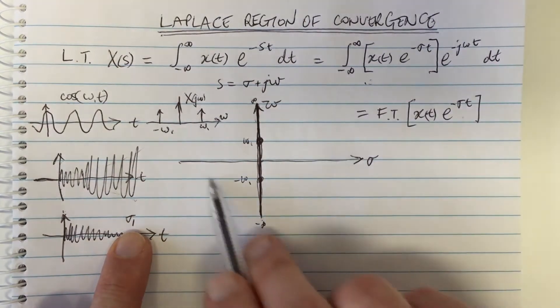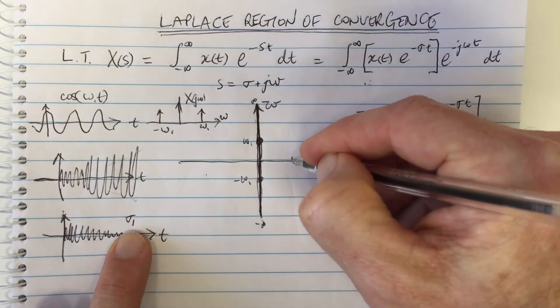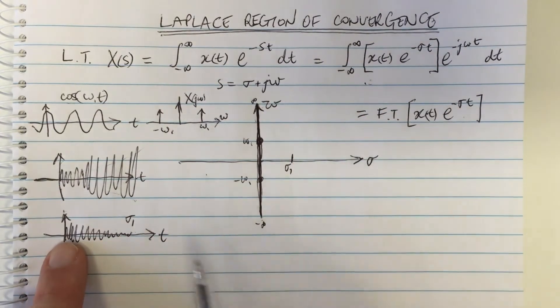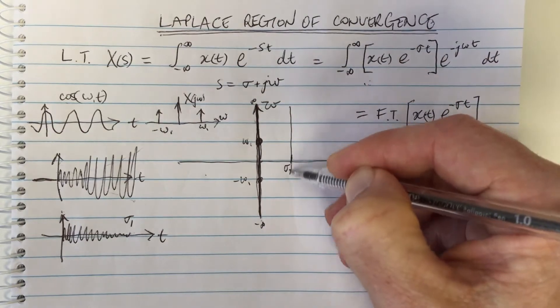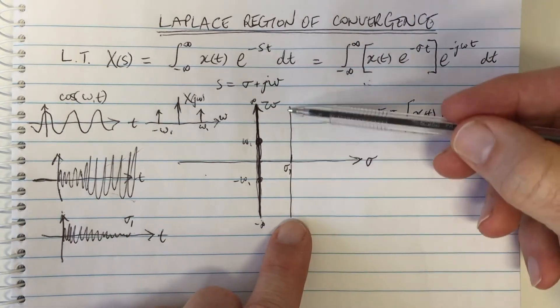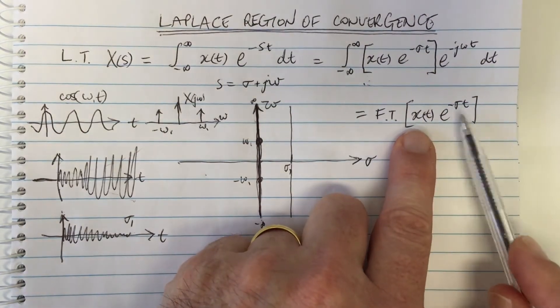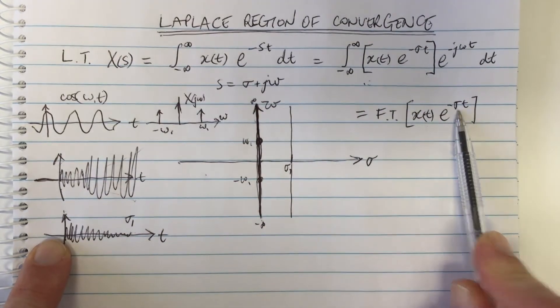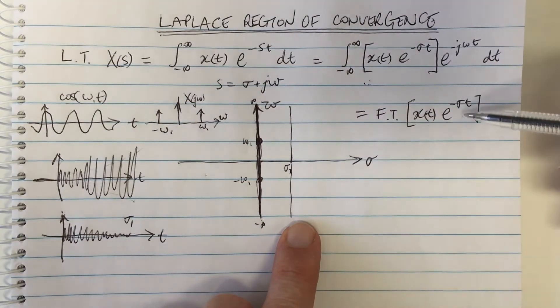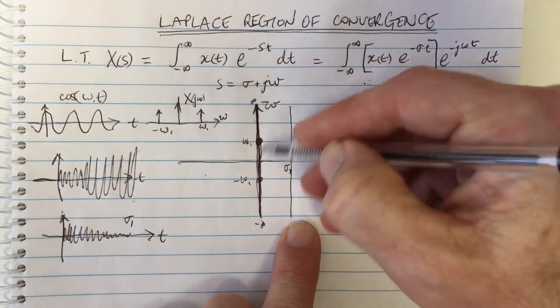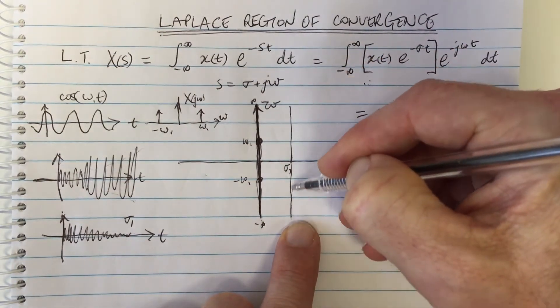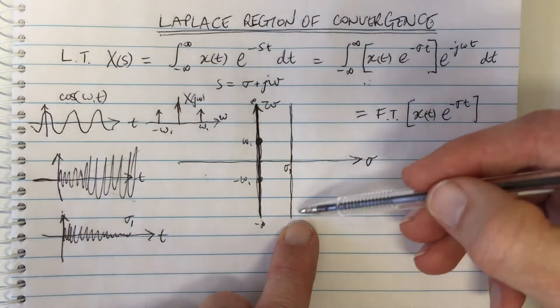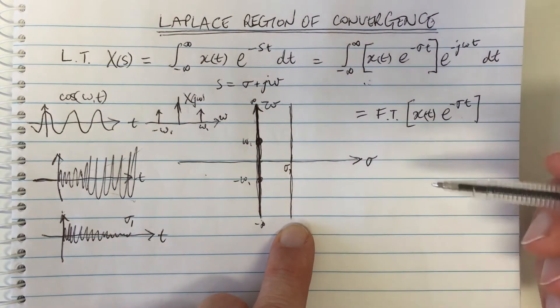Well on our plot over here, that means for a particular value of sigma, maybe sigma one here, then we're now looking at something which is the Fourier transform of the waveform which has been multiplied by this negative exponential. So that is now something that goes from in the omega axis again, but it goes along this line here. So there's a Fourier transform along this line here that goes from minus infinity to infinity.